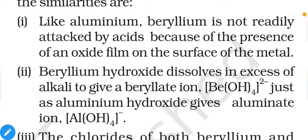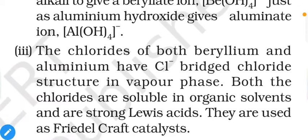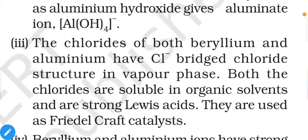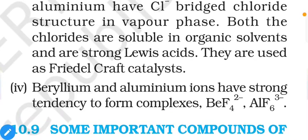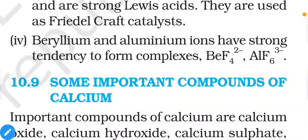Beryllium hydroxide dissolves in excess alkali to give beryllate ion, just as aluminium hydroxide gives aluminate ion. The chlorides of both beryllium and aluminium have Cl⁻-bridged chloride structure in the vapor phase, and both chlorides are soluble in organic solvents and are strong Lewis acids used in Friedel-Crafts catalysis. Finally, beryllium and aluminium ions have a strong tendency to form complexes: BeF₄²⁻ and AlF₆³⁻. From the next lecture, compounds of calcium will be discussed.